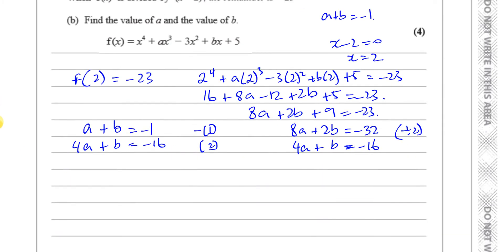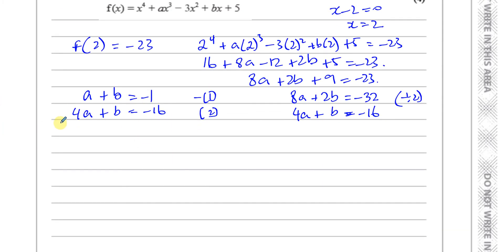Now I can eliminate the b's. I can use substitution, I can use elimination. I'll use elimination. I'll do equation two take away equation one. That will give me a positive a term. 4a - a is 3a. -16 - (-1) is -15.